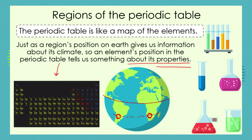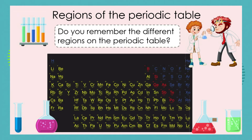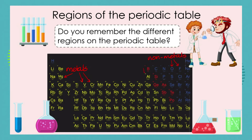Do you remember those different regions? We have learnt about the metals, indicated in yellow, and in our last lesson we looked at the non-metals — elements such as carbon, nitrogen, oxygen, and fluorine. Metals and non-metals are almost the opposites of each other in terms of their properties.